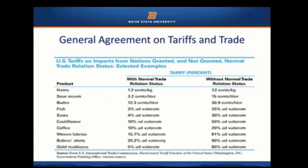Here's another example — gold necklaces. If you're a WTO member, you face a 5% ad valorem tariff, meaning a percentage of the sales price. If you're not a member of the World Trade Organization, you get hit with an 80% ad valorem tariff. So on a gold necklace that sells for $100, your tariff would be $80. The difference is huge.